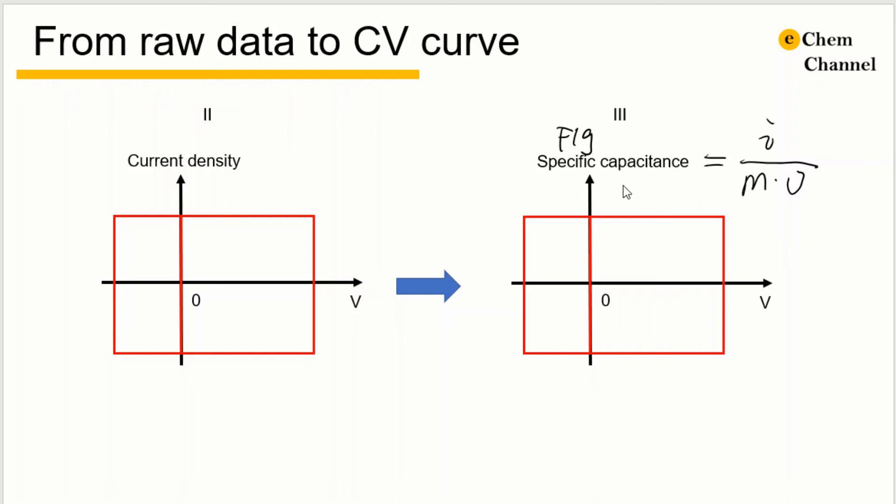Now from this type of CV curve, we can directly observe from the Y label about how large the capacitance is. If we would like to have a general comparison of the capacitance between different materials, we can simply put them all in the same plot and see which curve gives the largest area.